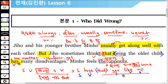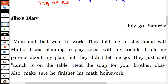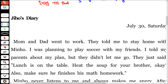2형식 동사예요. 보어 자리에 부사가 올 수 있나요? 절대 없어요. be동사는 보어에 형용사가 와야 해요. 반드시 형용사가 와야 하고, the opposite 자리에 하이라이트 별표예요. work는 '일하다'라는 뜻도 있지만 workplace처럼 '직장'이라는 뜻도 있어요.